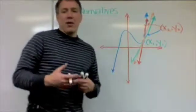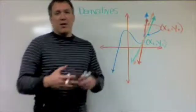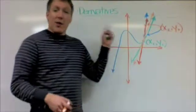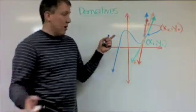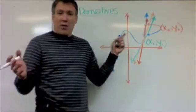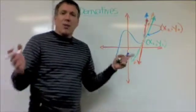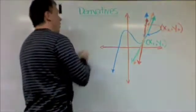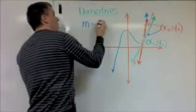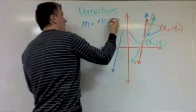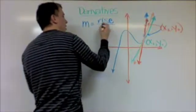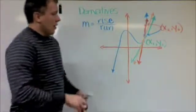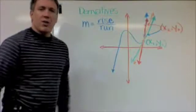A derivative is the slope of the tangent line. I'll say that over and over again. And the slope is rise over run — we're going to use that idea to build our definition of a derivative.